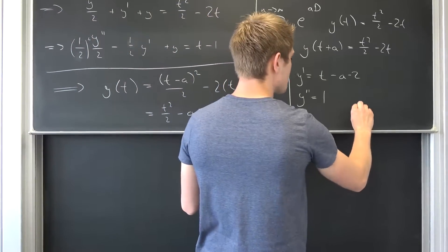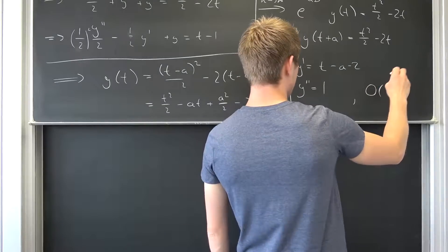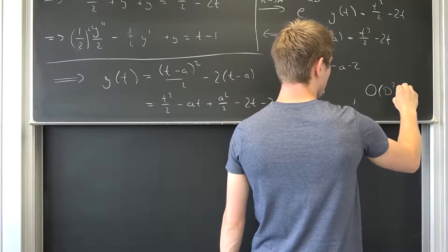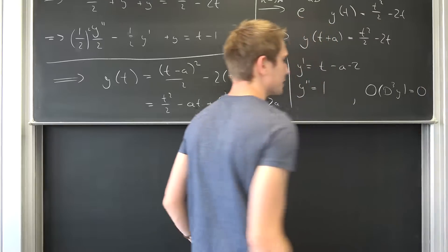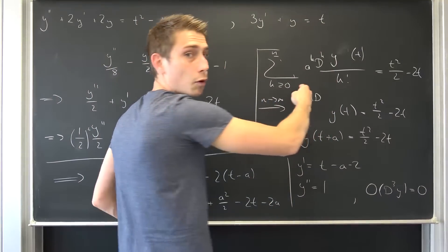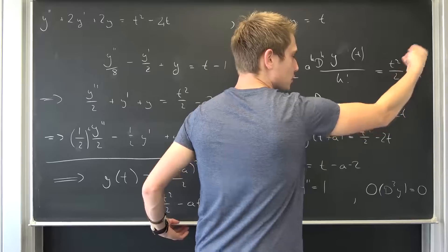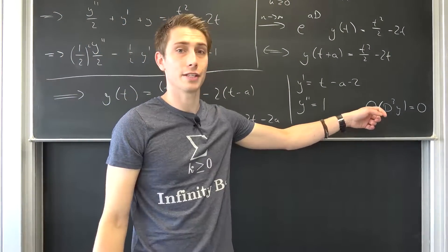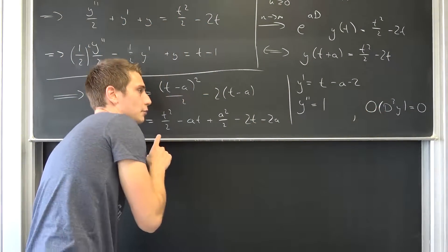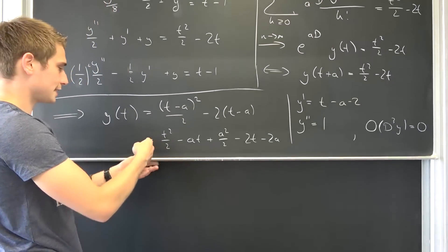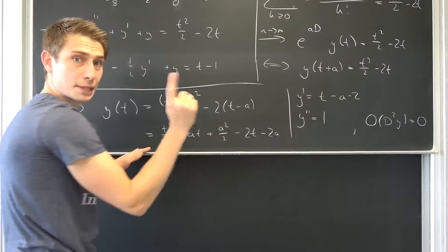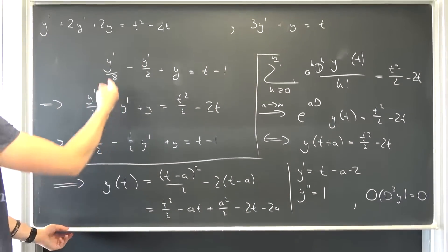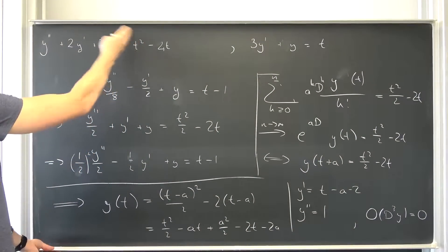And if we differentiate even further, D to the third power y is going to result in zero. Meaning if we just take a look at this more general form, doesn't matter what it equals to on the other side, our solution right now is going to vanish after the second derivative. Meaning if we plug all of this in, we can now check if this right here is seriously a particular solution to our differential equation.